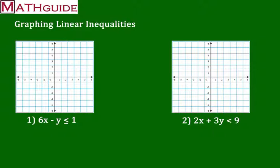These linear inequalities are in a different form than our last video. These are in standard form. Standard form is when you've got both variables, the x and the y, both on one side of the equation — or an inequality in this case — and we've got the constant term, the non-variable, on the other side. I've explained how to do this with equations; now we're going to do it with inequalities.